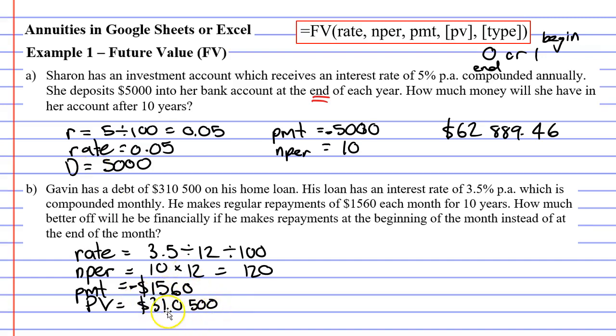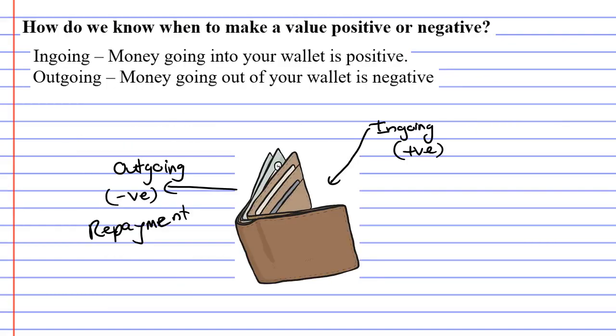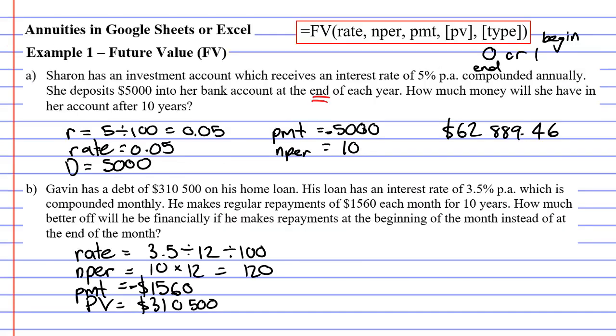Now some of you would look at this and think, this should be a negative number, because this is a loan. This is an amount of money that I owe. But we need to think more about outgoings and ingoings. Let's go back to the wallet. If Gavin owes the bank $310,500, it means that the bank has actually given him this money. That's why he owes it to the bank. So it's actually an ingoing. It's gone into his wallet. And because of that, he now owes a large amount of money. So our present value, which is a loan, is actually a positive amount.